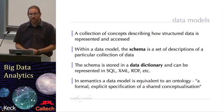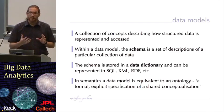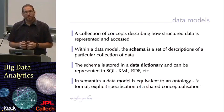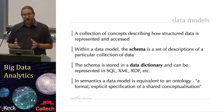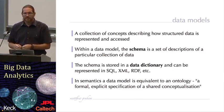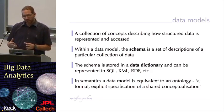A data model is a collection of concepts which describes how your data is structured and how it can be represented and accessed. Within a particular data model, a schema is the set of descriptions of a particular collection of data. So I may have my data in a tabular or relational data model, and the schema would then be the description of the tabular format that is used — the columns, the data value types, that sort of information.